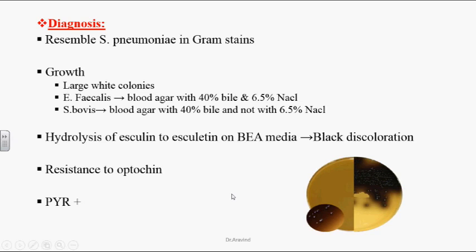Diagnosis: on Gram staining, these organisms resemble Streptococcus pneumoniae, so Gram staining alone cannot confirm identification. These organisms grow as white colonies on blood agar. Enterococcus faecalis grows on blood agar with 40% bile and 6.5% sodium chloride, as it is resistant to bile and high salinity. Streptococcus bovis also grows on blood agar with bile, but cannot grow in 6.5% sodium chloride.